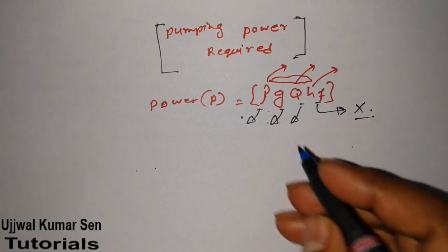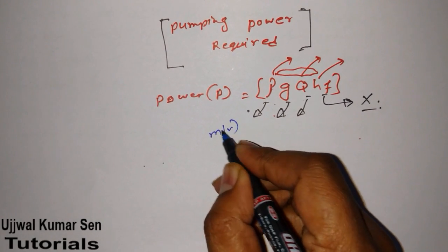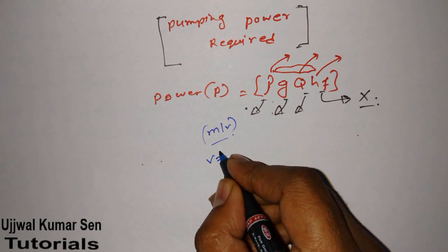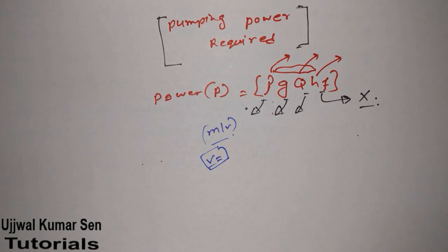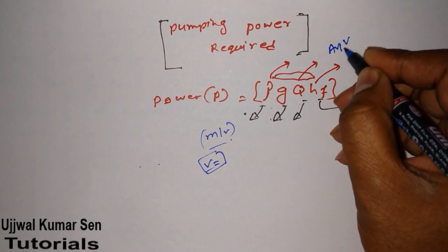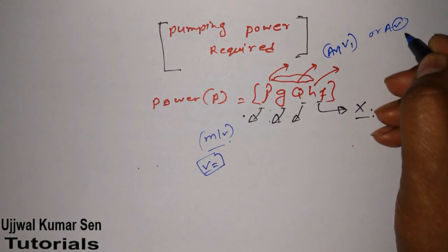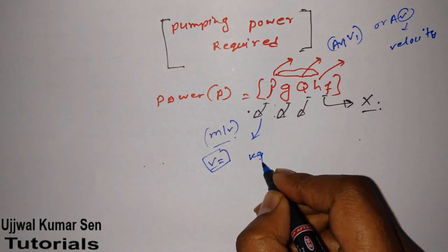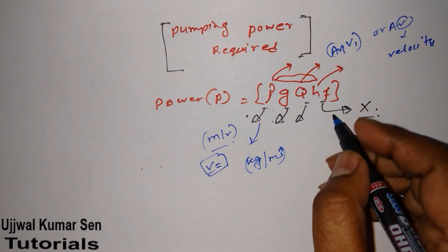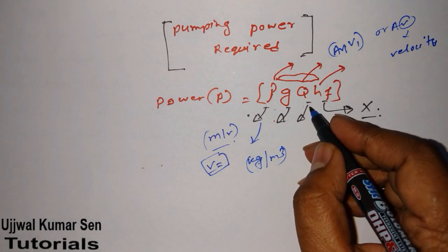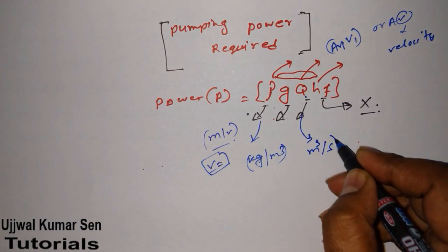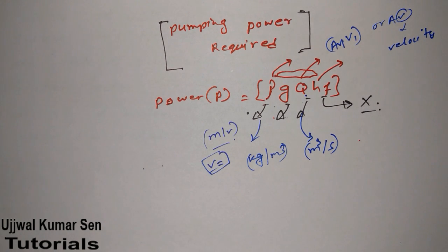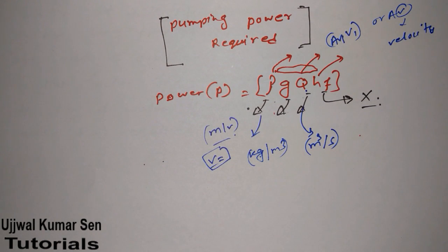Let me share the supporting formulas. Density is mass divided by volume, and you need to know how to find volume for any given shape. Discharge Q equals area times velocity (A × V), where V is velocity, not volume. The unit of density is kg/m³, G is 9.81 m/s², and the unit of Q is m³/s.